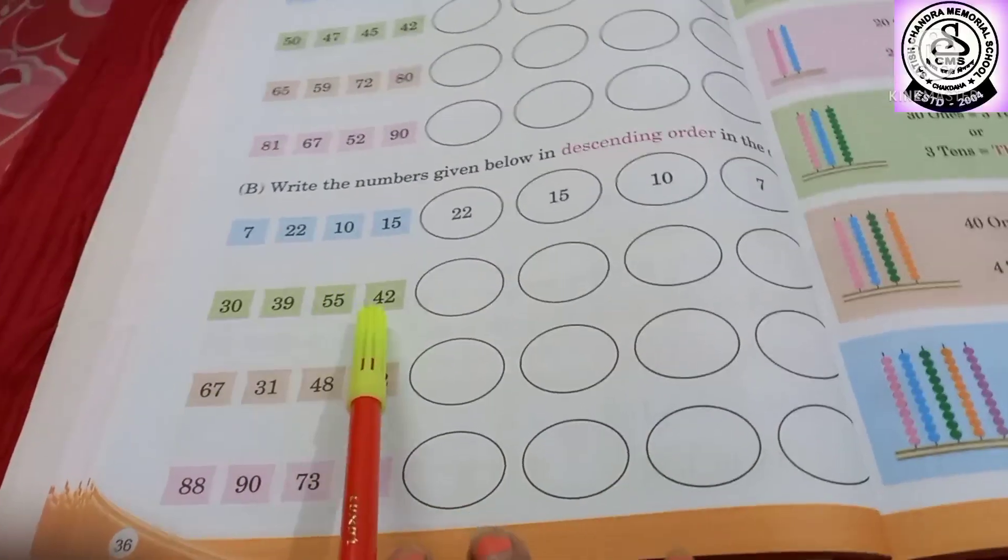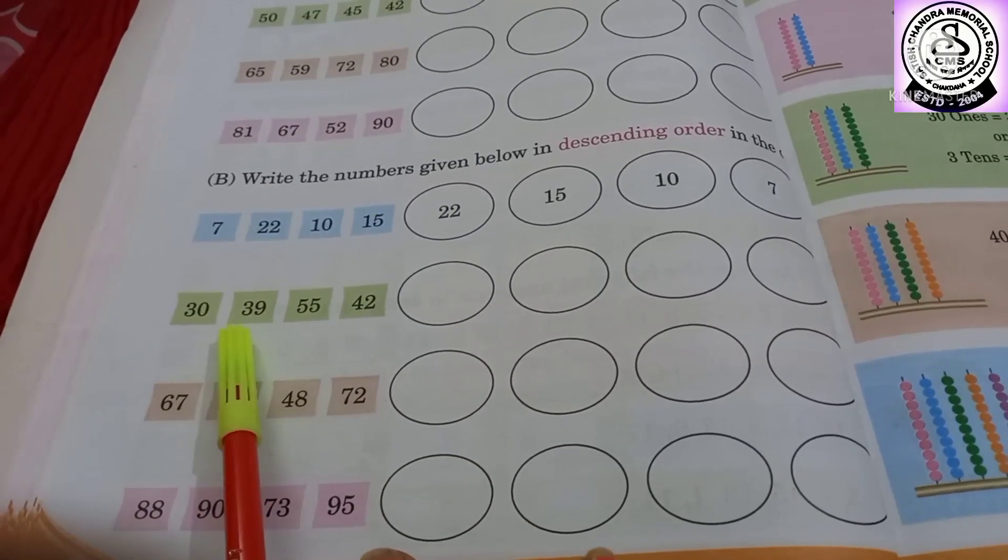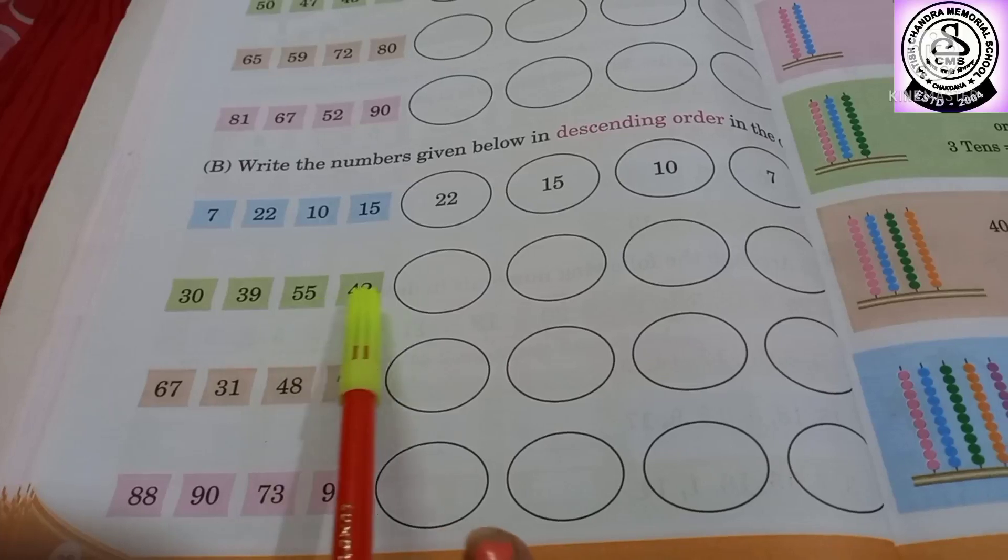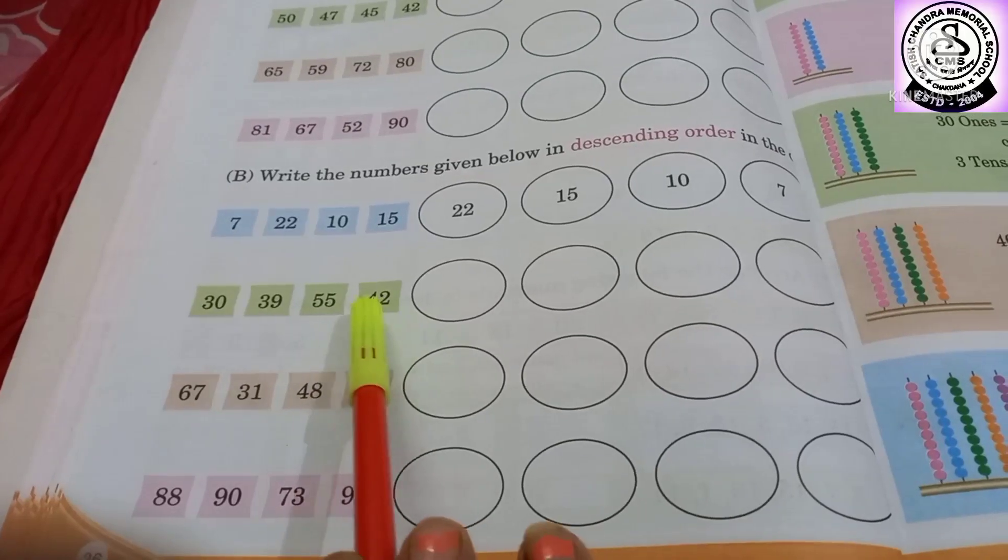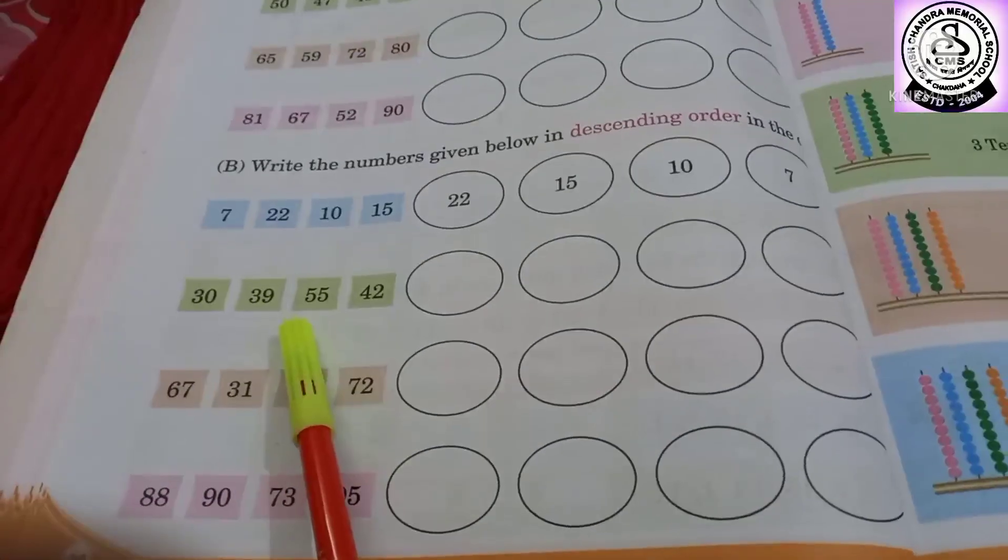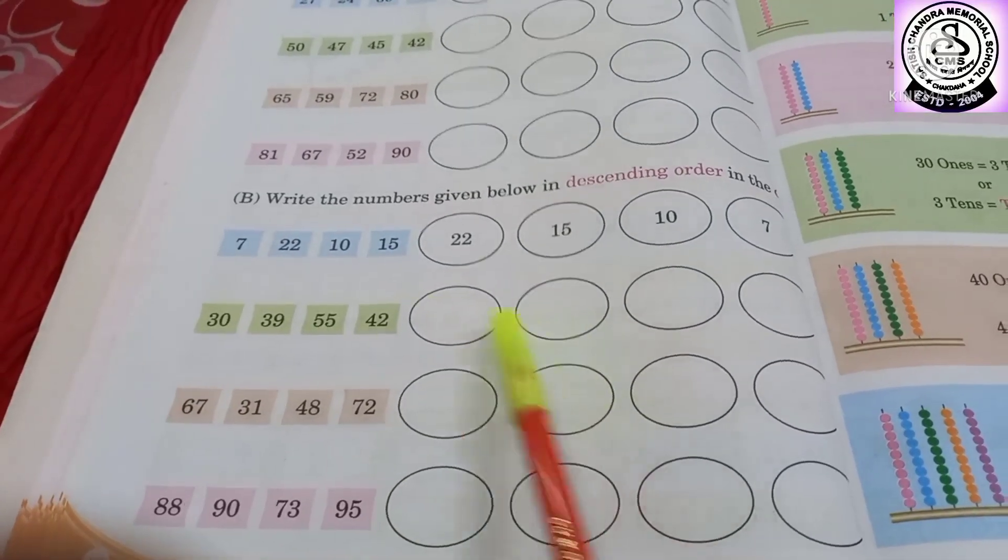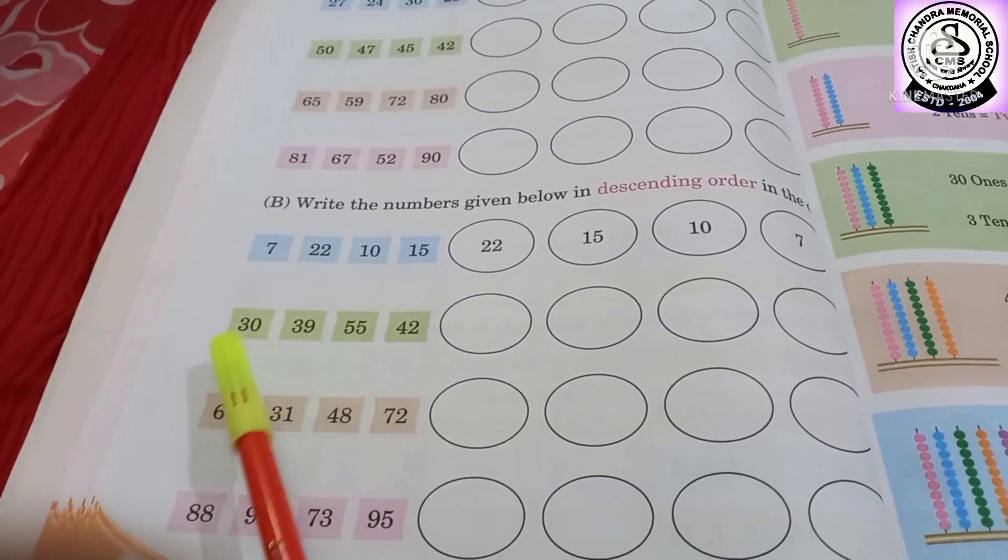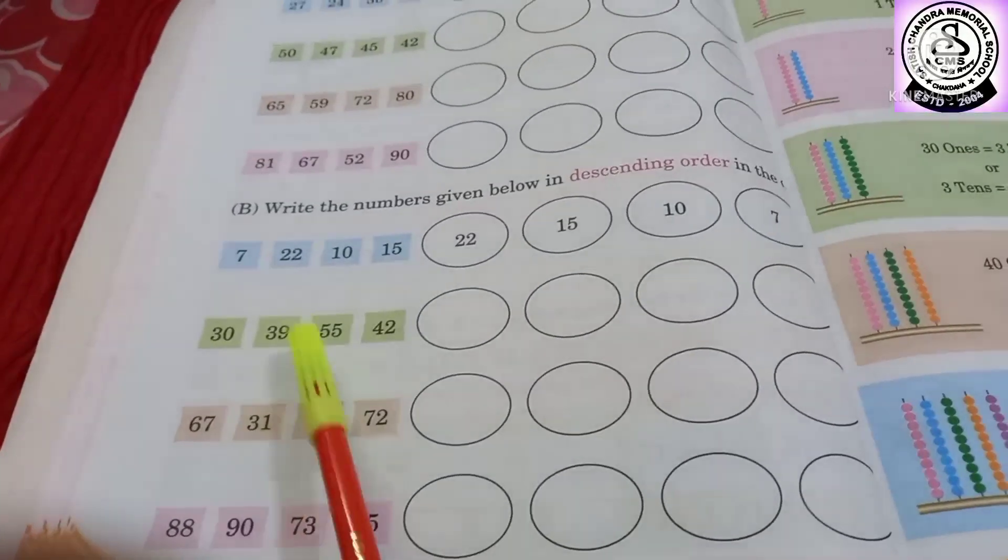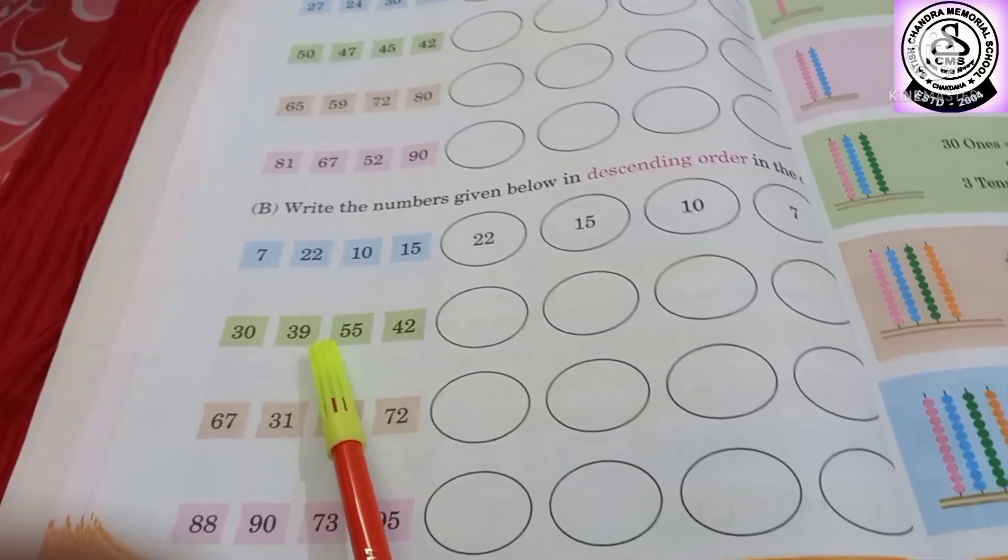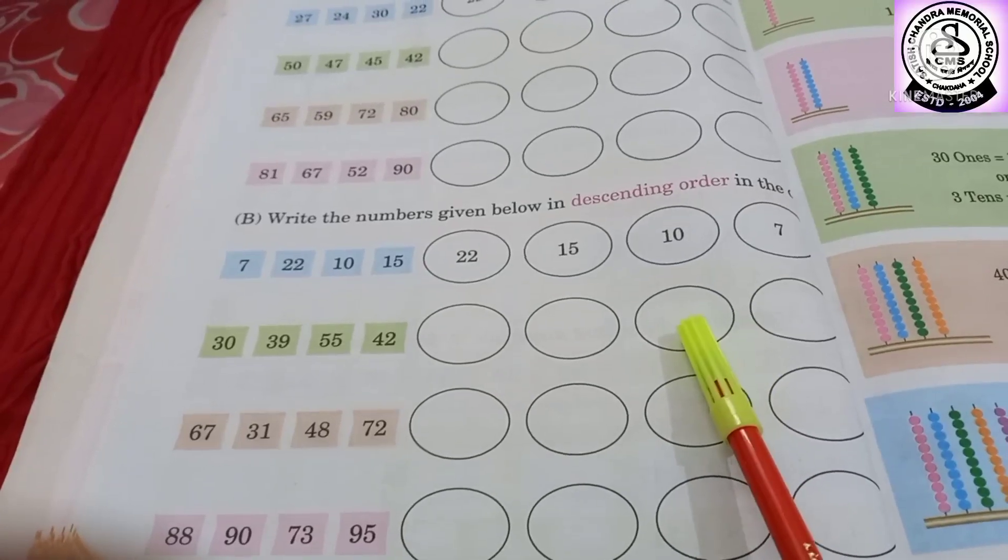So first we have to compare with tens digit number. So here 3, here also 3, then 5, then 4. So 5 is bigger than 4 and 5 is bigger than 3 also. So that means 55 will come first. After 55, 42, then 39 and 30. Two numbers are left. So that time you have to compare with one's digit number. So here one's digit is 9 and here 0. That means 39 and then 30.